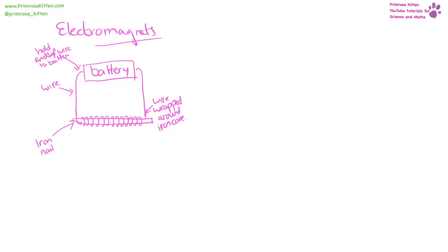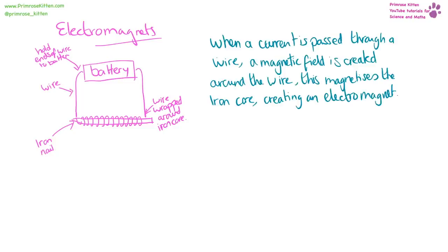You can make an electromagnet at home with a battery, some wire, and an iron nail. An electromagnet is simply an iron core with wire coiled around it, connected to a current. The current creates a magnetic field around the wire, which strongly magnetizes the iron bar. To change the strength of an electromagnet, you can change the current or change the number of turns of wire coiled around the iron core.